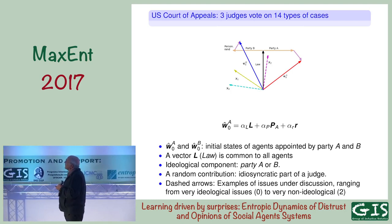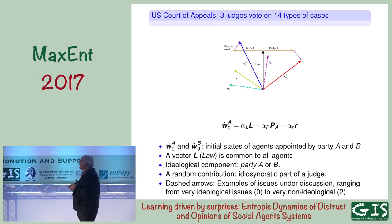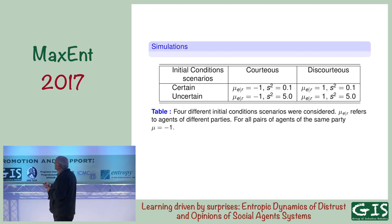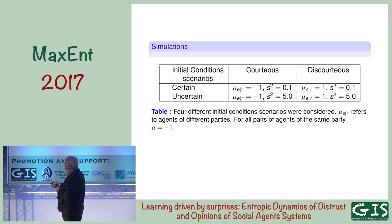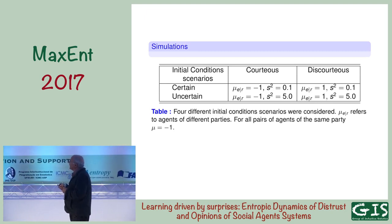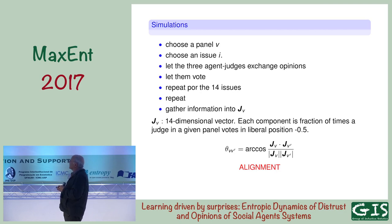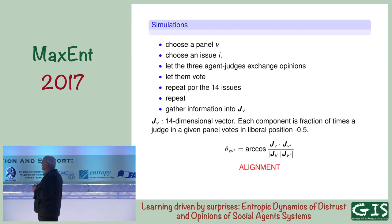I'm going to do simulations and consider four scenarios. Judges from the same party trust each other — they have a negative mu. But from different and opposing parties, they might have courteous or discourteous relations, and they might be certain or uncertain about their positions. I choose a panel, choose an issue, let the three agents exchange opinions, let them vote, repeat for the 14 issues, and gather information about a vector J — a 14-dimensional vector — where each component is the fraction of times a judge in a given panel votes in the liberal position, minus 0.5.